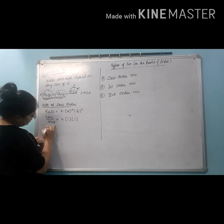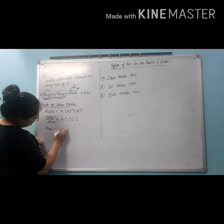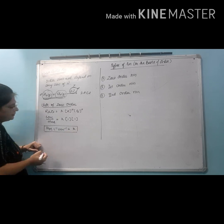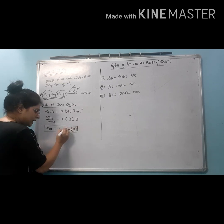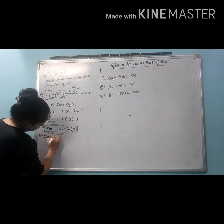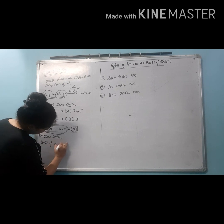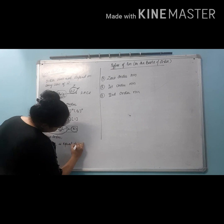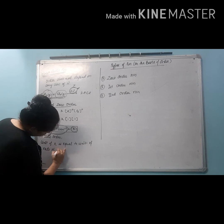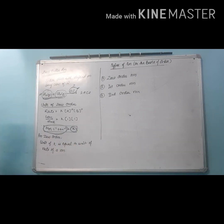Concentration divided by time equals moles per liter per second equals K. So for zero order reaction, the specific rate constant is equal to the rate of the reaction. The unit of K equals the unit of rate of the reaction, which is moles per liter per second.